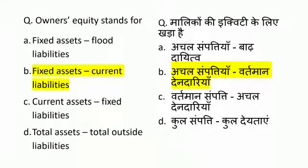The correct answer of this question is option number B — Owner's equity stands for Fixed Asset minus Current Liability.